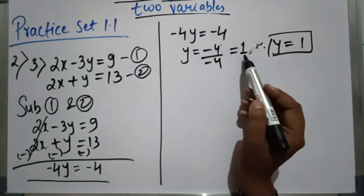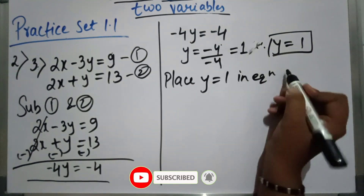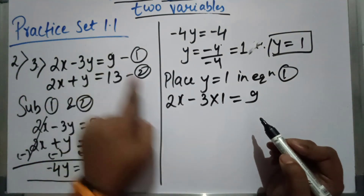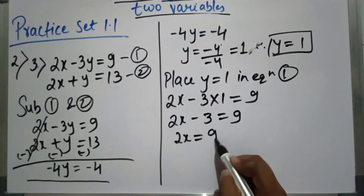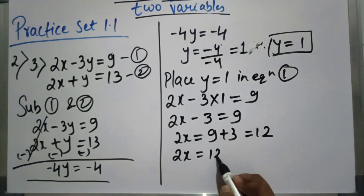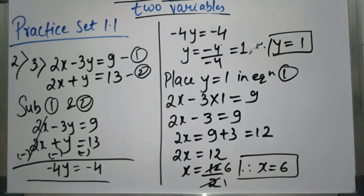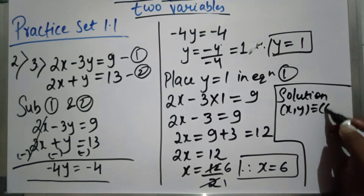Minus minus cancel, so y equal to 1. Now place y equal to 1 in equation 1: 2x minus 3 into 1 equal to 9, so 2x minus 3 equal to 9, so 2x equal to 9 plus 3, which is 12, therefore x equal to 12 upon 2, which is 6. So the solution is: x, y equal to 6, 1.